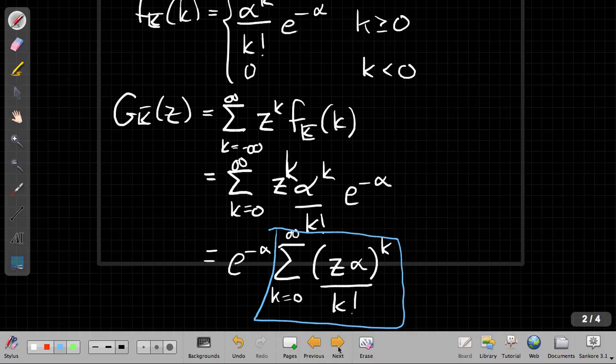So if I move on to the next page, let me write that up. So this part here is equal to the Taylor series for e to the z alpha. So if I use that as I go to the next page to simplify things.